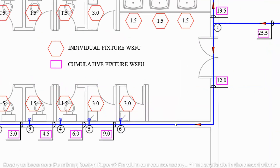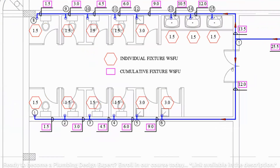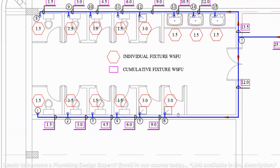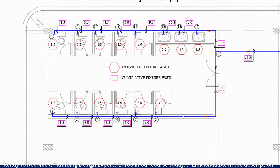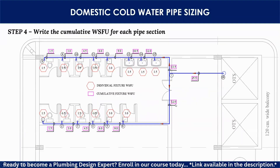For example, for section 6–7, the WSFU is 12. This pipe serves two showers and four hand sprays. Each hand spray has 1.5 WSFU, so four hand sprays give 1.5 × 4 = 6 WSFU. The two showers give 3 + 3 = 6 WSFU. So 6 + 6 = 12 WSFU total. This is how you calculate and write the cumulative WSFU for each pipe section.